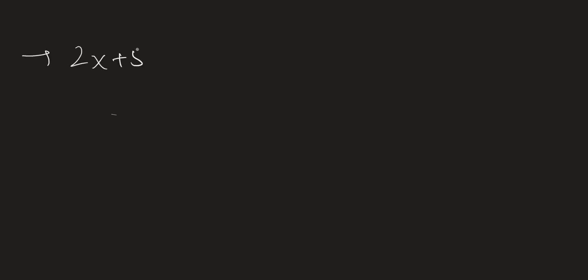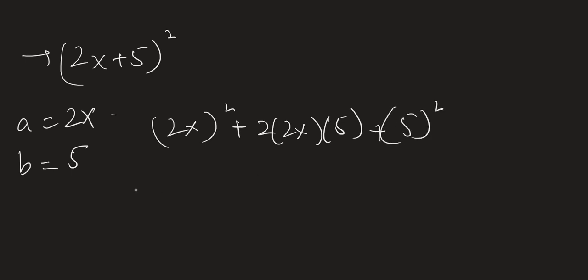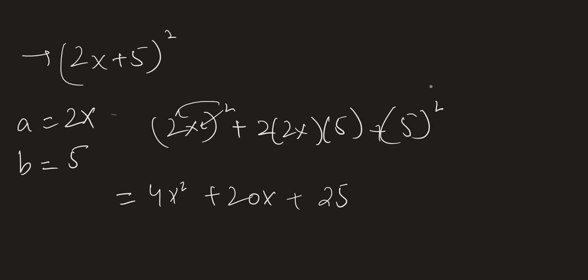Another example is 2x plus 5 whole square. Here our a is 2x and our b is 5. This expands to 2x whole square plus 2 times 2x times 5 plus 5 squared. 2x whole square is 4x squared, as the square applies to both 2 and x. Then 2 times 2x times 5 gives 20x, since 2 times 2 is 4 and 4 times 5 is 20. Plus 5 squared is 25.